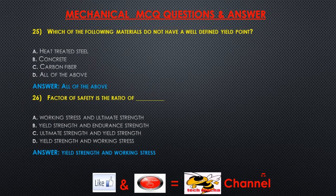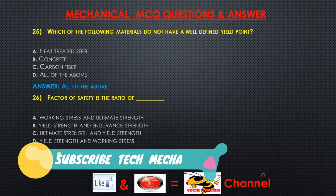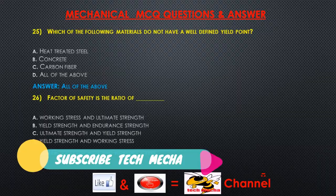Question 25: Which of the following materials do not have a well-defined yield point? A) heat treated steel, B) concrete, C) carbon fiber, D) all of the above. Question 26: Factor of safety is the ratio of — A) working stress and ultimate strength, B) yield strength and endurance strength, C) ultimate strength and yield strength, D) yield strength and working stress. Answer: Yield strength and working stress.